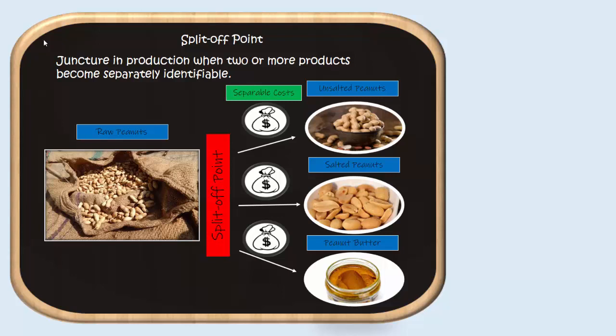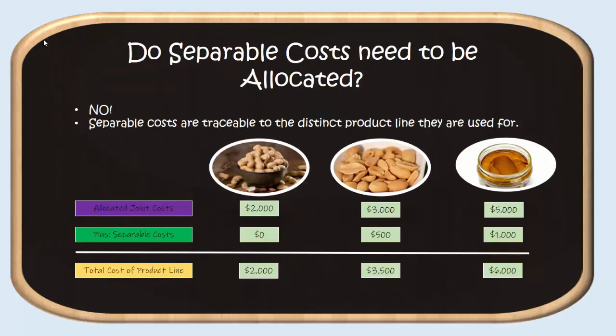It would be salt for the salted peanuts. It would be all of the oil and jars for the peanut butter, and all of the other labor and indirect costs that go with it.